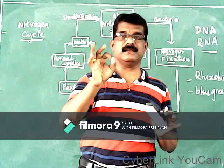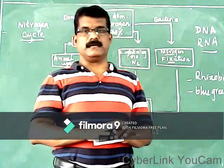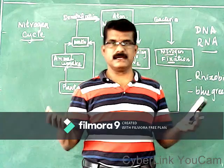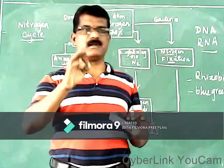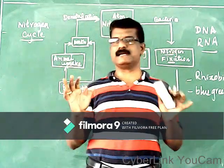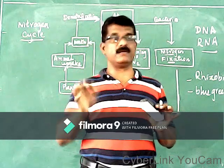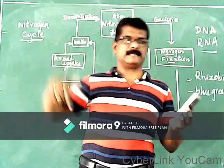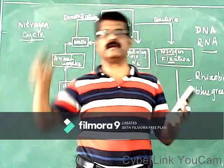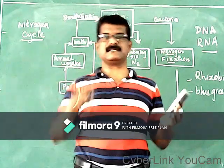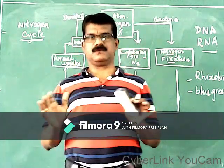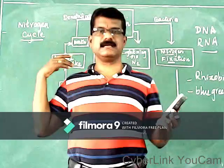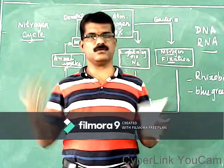Therefore, the nitrogen cycle is an example of a perfect cycle. You can expect a question: why is the nitrogen cycle known as a perfect cycle? Because the percentage of nitrogen in the atmosphere always remains the same. That is why the nitrogen cycle is an example of a perfect cycle. This is one of the very important parts of chapter number 2 because a question may be asked from this topic. Hope you understood this.